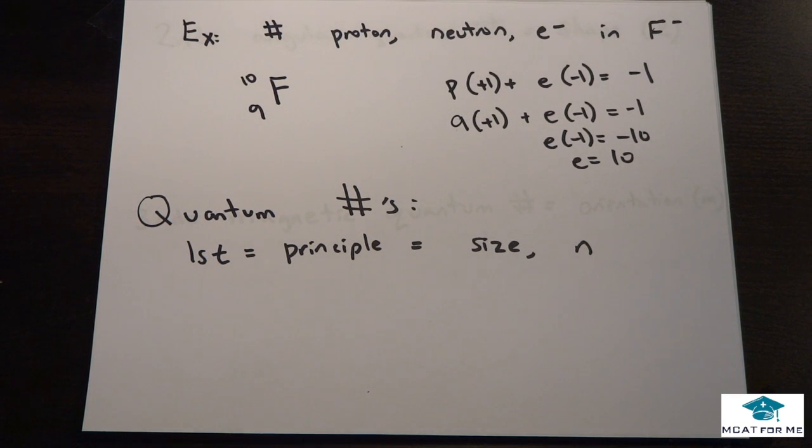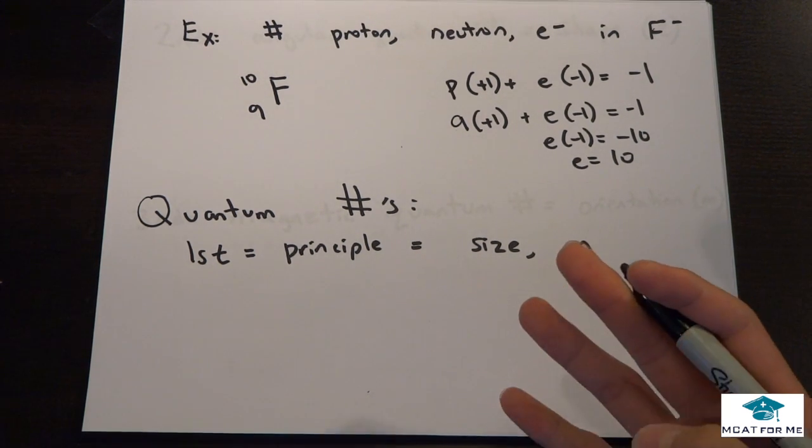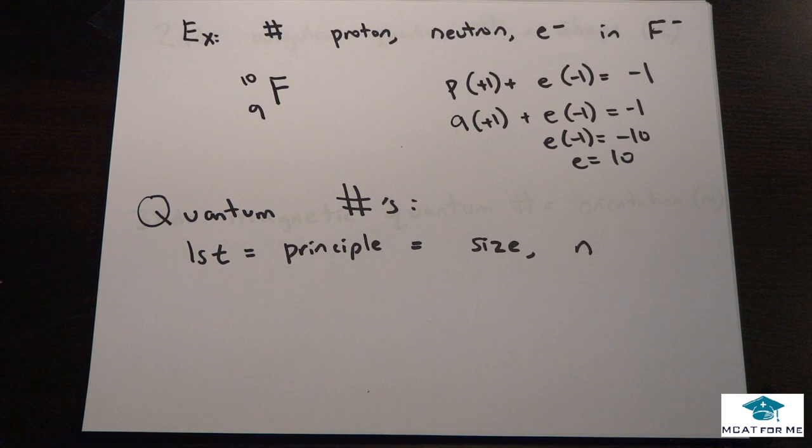So the next thing we're going to be talking about is quantum numbers, what exactly are quantum numbers. Quantum numbers are how we define electrons in their orientations within an atom. And there's four different quantum numbers, and we'll go through each one of those.